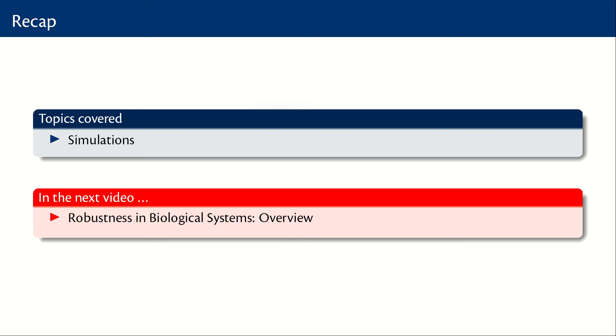In this video, we looked at simulations of the Boolean network model that we built for studying MTB human interactions. It was not a pure Boolean model but we also had some nice hacks to include how the bacterial load changes and the efficacy of a drug and so on. And in the next video, we will switch gears and look at some advanced topics. We will first look at robustness in biological systems. I will give you a brief overview of robustness in biological systems.